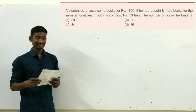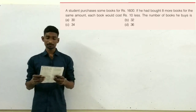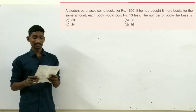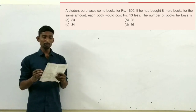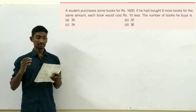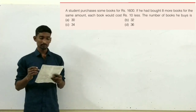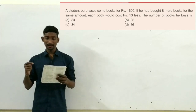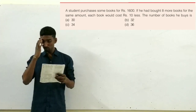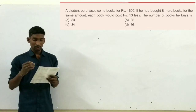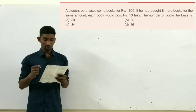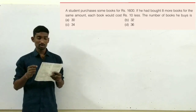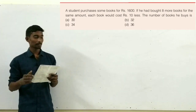Let's look at the next question. A student purchases some books for ₹1600. If he had bought 8 more books for the same amount, each book would cost ₹10 less. The number of books he buys is?